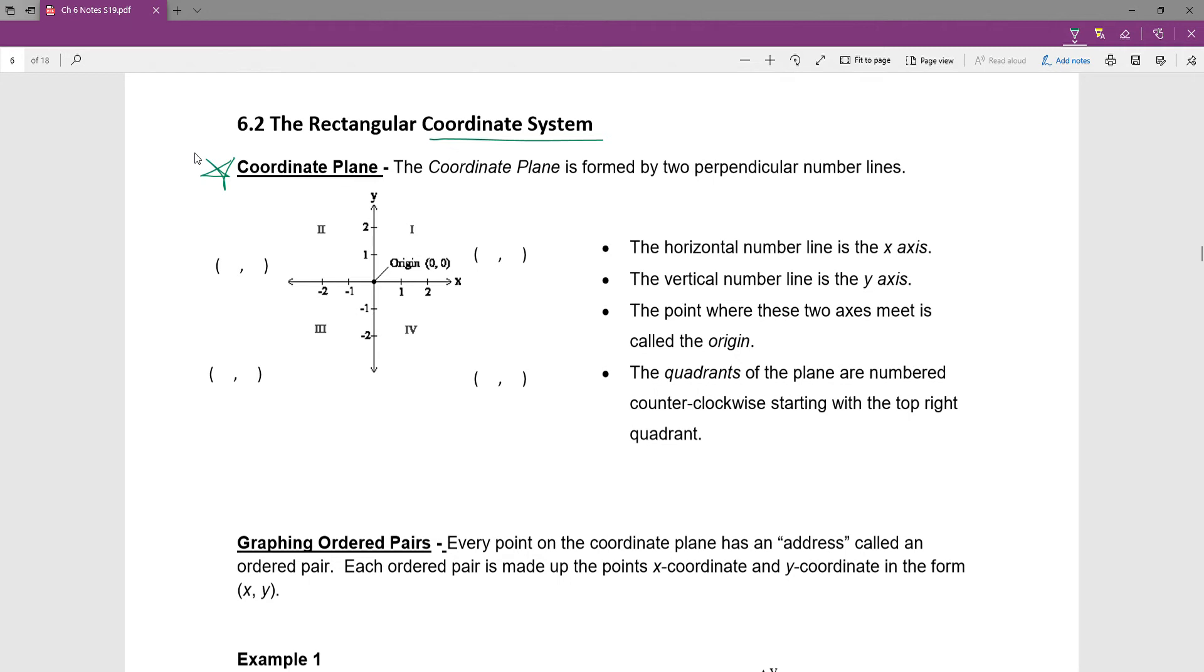And so all of our graphs are going to have a horizontal number line, which is the x-axis, and it's labeled with 0 in the middle and 1, 2, 3, all the way up to infinity, and negative 1, negative 2, all the way down to negative infinity. And then it also has the vertical number line. And so we say that is the y-axis. And all of our coordinate planes, all of our graphs are always going to be set up with the x-axis and the y-axis.